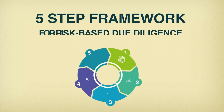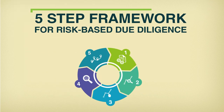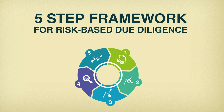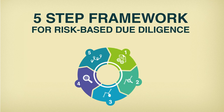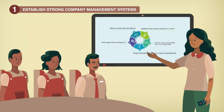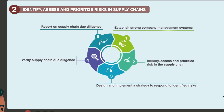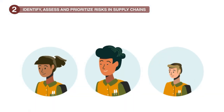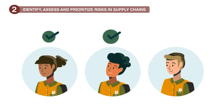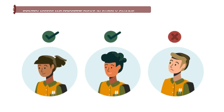It introduces a five-step framework for risk-based due diligence to support companies in managing risks while contributing to development. Step 1: Establish strong company management systems. Step 2: Identify, assess and prioritise risks in supply chains.